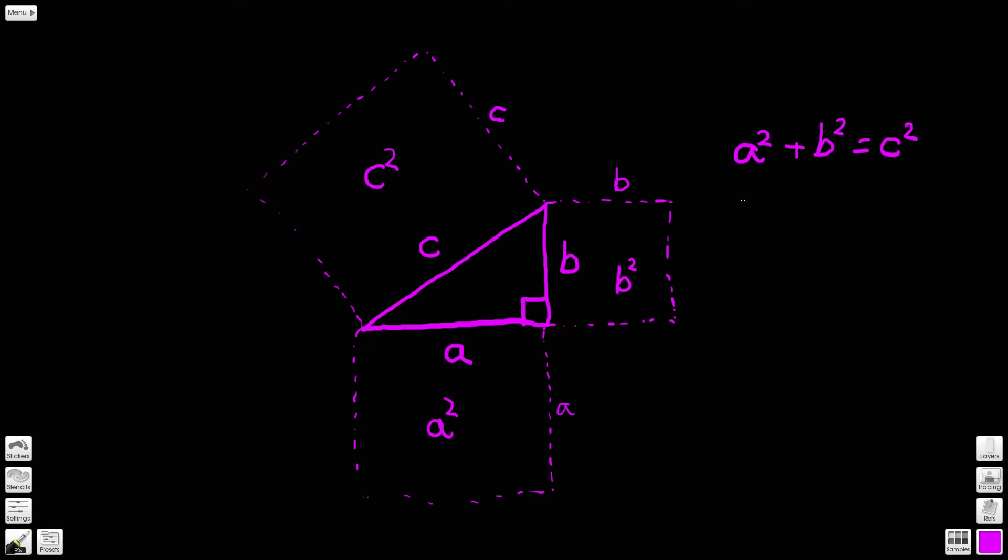The simplest way to understand this is that if we take, let a equal three units long and let b equal four units long.